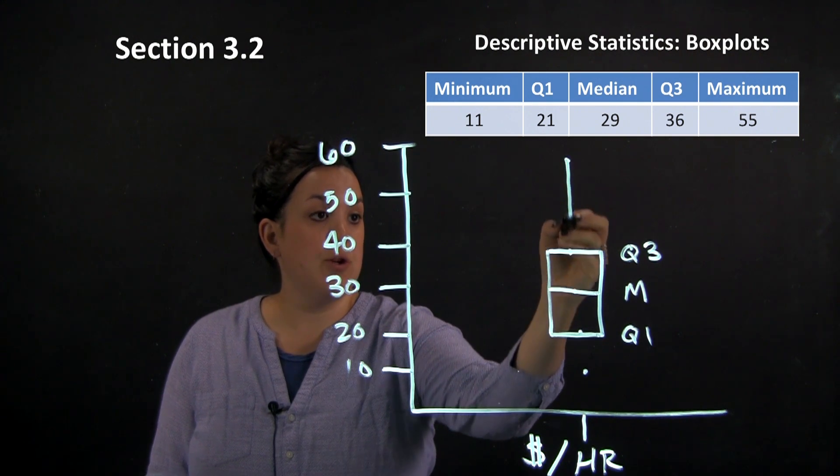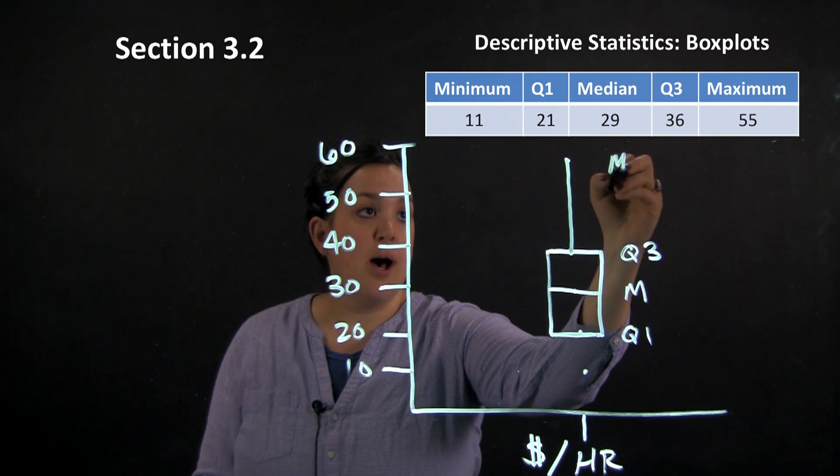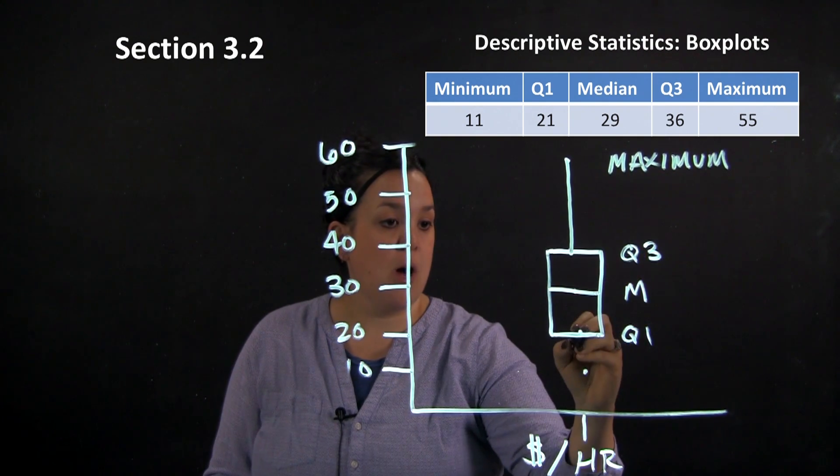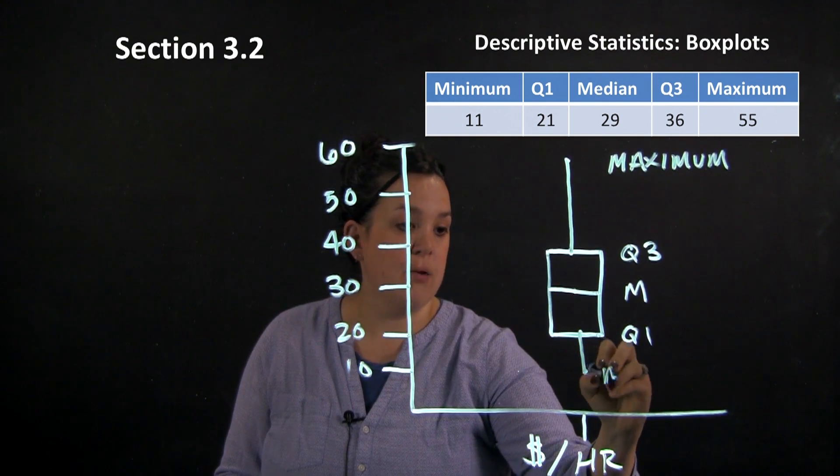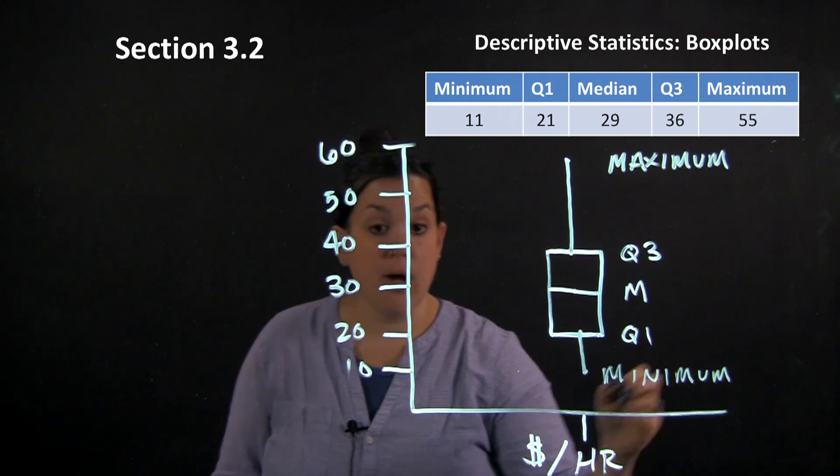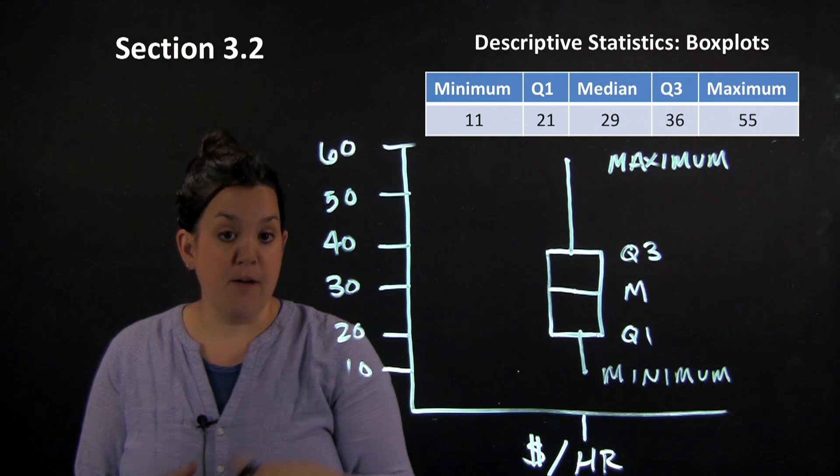Then you would connect a line from Q3 up to the maximum and you would draw a line from Q1 down to the minimum. So that is what a box plot is made up of for the five number summary.